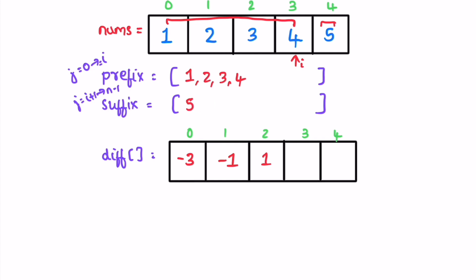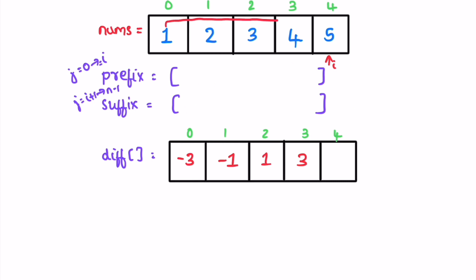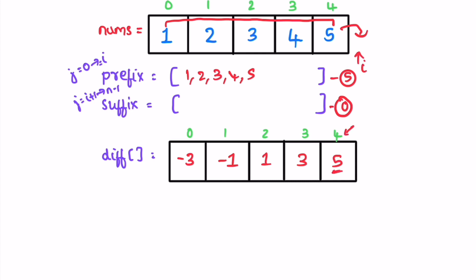Now i is pointing at three. The prefix HashSet contains one, two, three, four, and the suffix HashSet contains only five. Length of prefix is four, length of suffix is one, so the difference is 4 minus 1, which is three — three is added at difference index three. Now i is pointing at four. The prefix includes all elements to its left including i: one, two, three, four, five. The suffix is empty since there is no element to its right. Length of prefix is five, length of suffix is zero, so 5 minus 0 is five — five is added at difference index four.